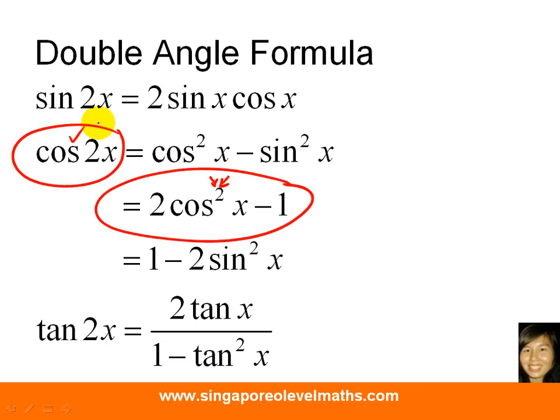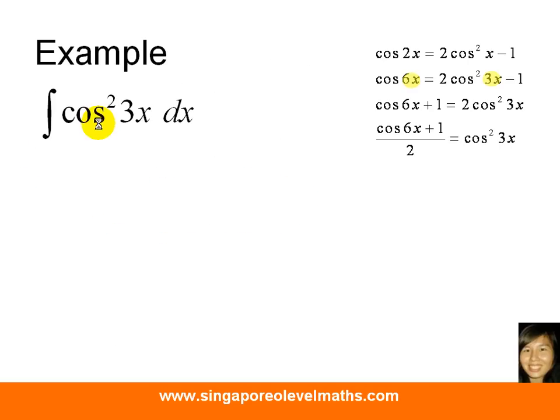Let's take a look at how we approach the question. Starting off with the formula that we have chosen over here, because the question involves cosine square 3x, you notice that I have my 3x over here. On my left hand side, it will be 6x.